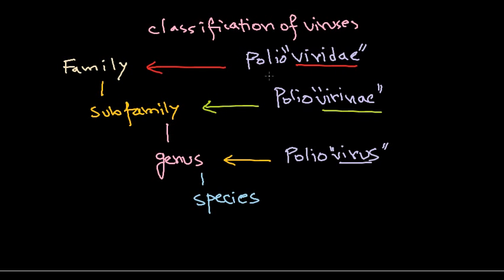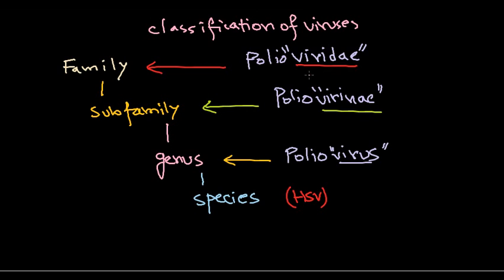To summarize: whenever we talk about a family, the suffix is 'viridae'; whenever we talk about a sub-family, the suffix is 'virini'; and whenever we talk about a genus, it ends in 'virus'. Species are simply different named strains. For example, herpes simplex virus is a species. Its genus is herpes simplex virus, its sub-family would be herpes simplex virini, and its family would be herpes simplex viridae. That is the nomenclature and classification scheme for viruses.